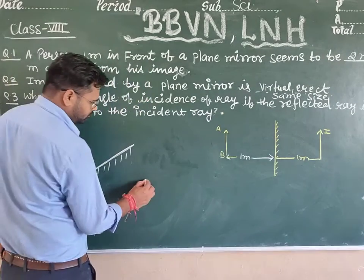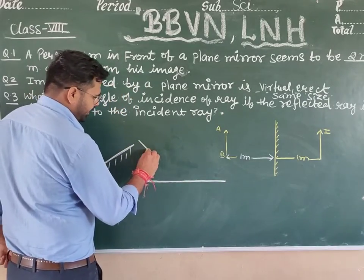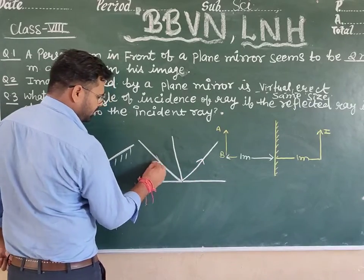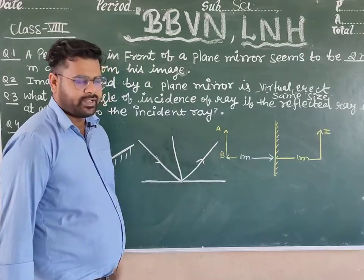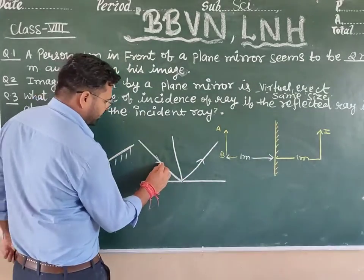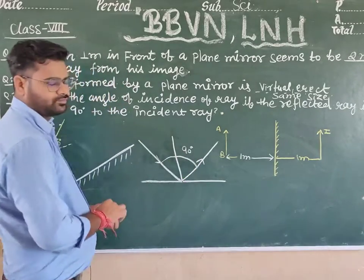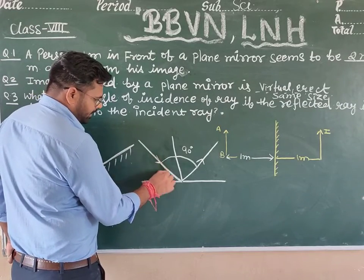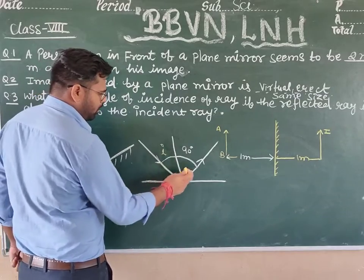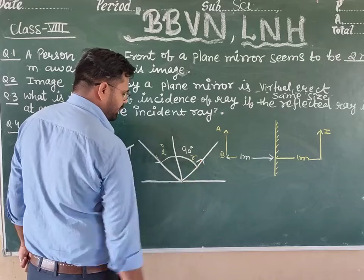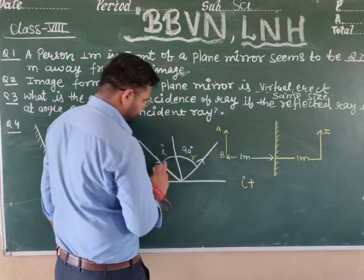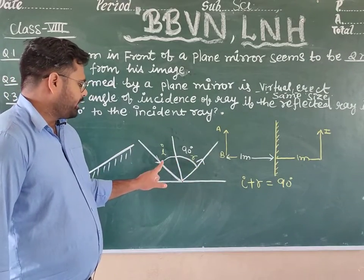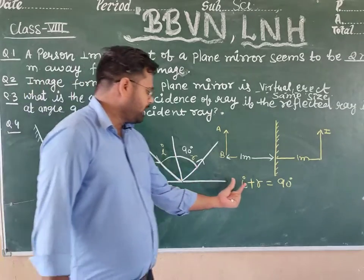So, I had taught you reflection. In this question, it is given that the reflected ray makes a 90 degree angle with the incident ray. So we have the normal, the incident ray, and the reflected ray. The angle between the incident ray and the reflected ray is 90 degrees. The angle of incidence (i) is between the incident ray and the normal, and the angle of reflection (r) is between the normal and the reflected ray. So i plus r equals 90 degrees.